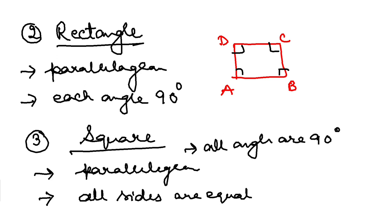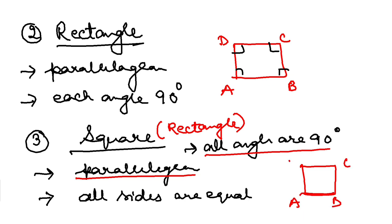Now try to understand some logic. It is a parallelogram and all angles are 90 degrees. That means a square is already a rectangle, but additionally here all sides are equal also. So all squares are rectangles, but all rectangles are not squares.